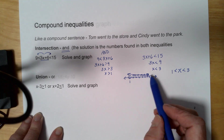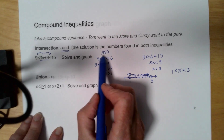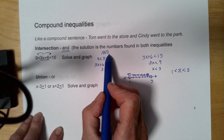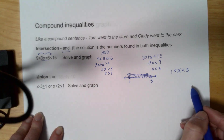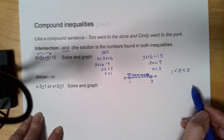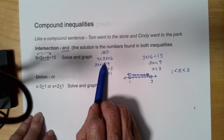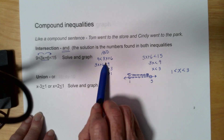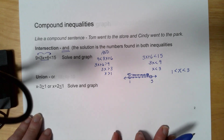If they didn't have anything in common — because it's an AND sentence — I would put an empty set. But here I'm looking for the numbers that are in both inequalities.